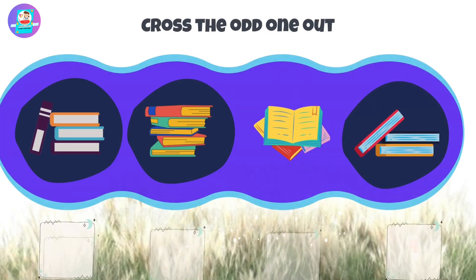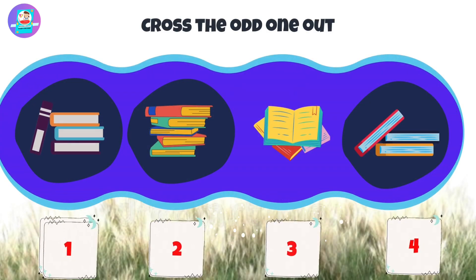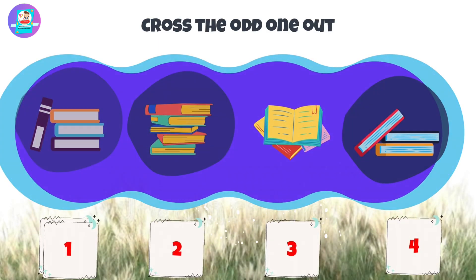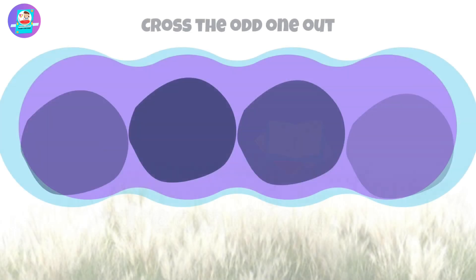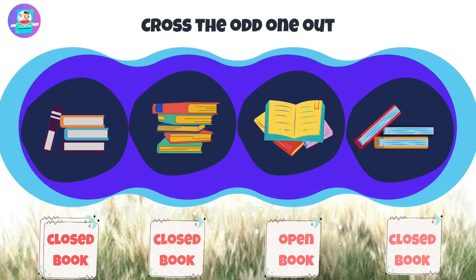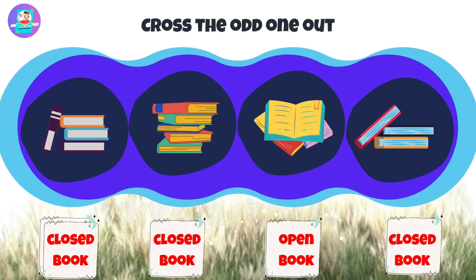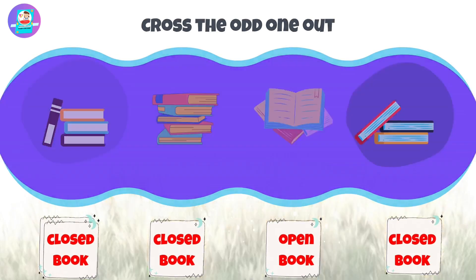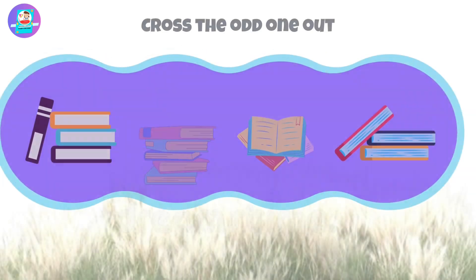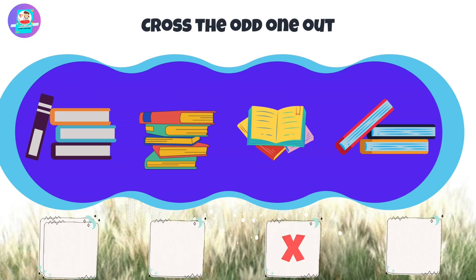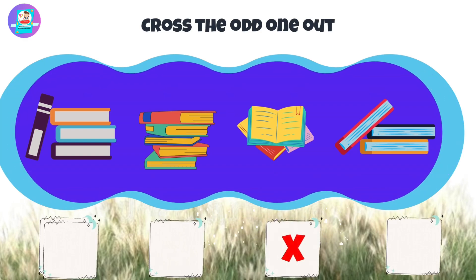Okay, let's check first. When we see here we have 3 closed books and 1 open book that is odd. So put a cross on this open book.